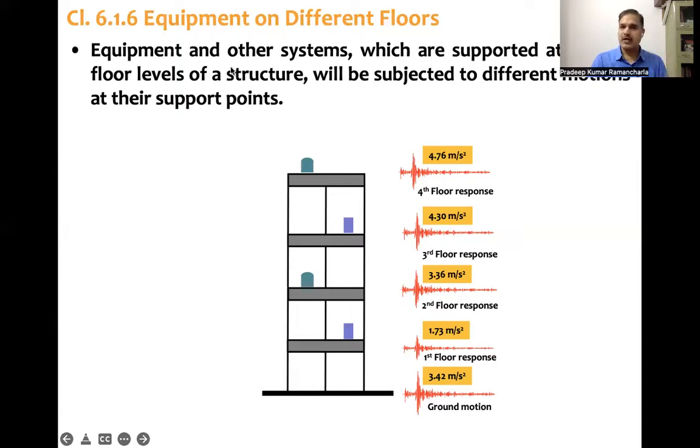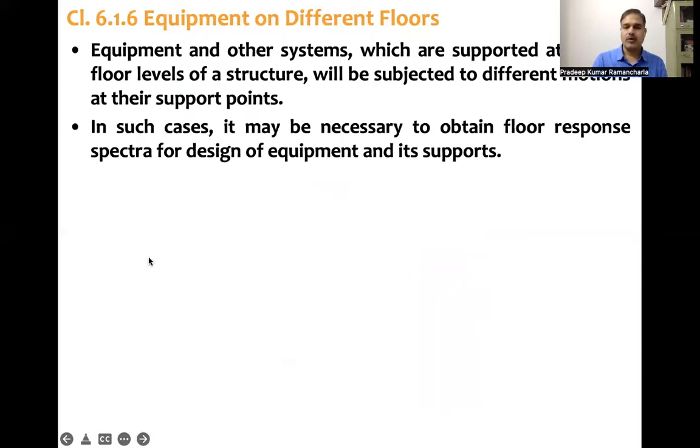What code says is the equipment and other systems which are supported at various floor levels of a structure will be subjected to different motions at their support points. So that's what is being demonstrated here. This first floor is subjected to this acceleration time history with peak acceleration of 1.73. Second floor is subjected to another response with 3.36 meters per second square. Third floor similarly 4.3 meters per second square and fourth floor 4.76 meters per second square.